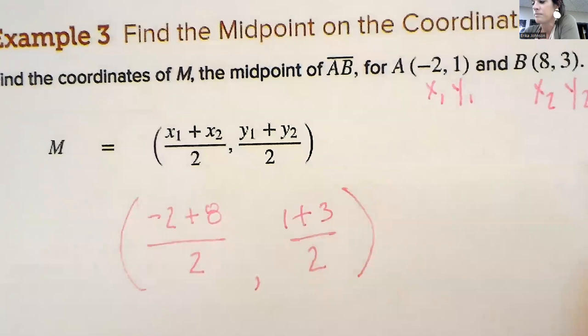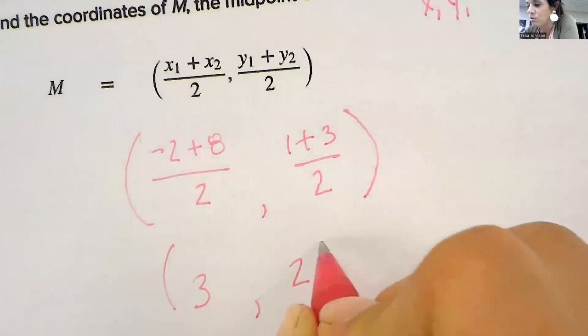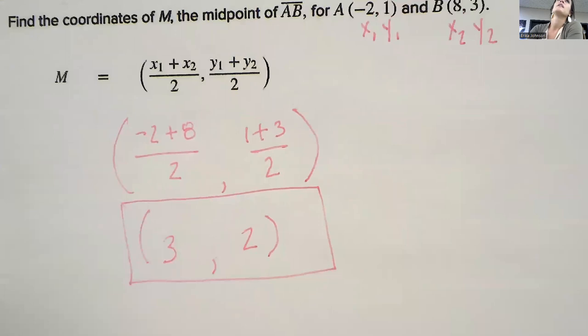Divide it by 2. Negative 2 plus 8 is 6. 6 divided by 2 is 3. And 4 divided by 2 is 2. That would be the midpoint of those two.